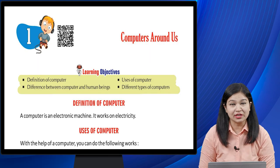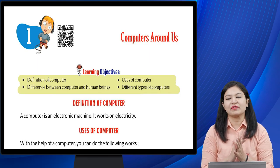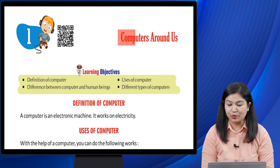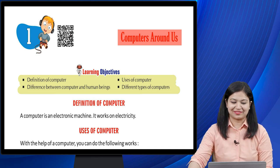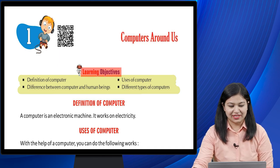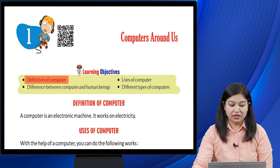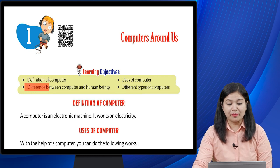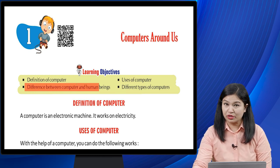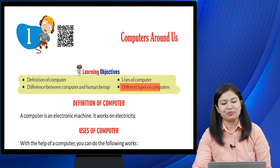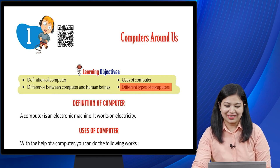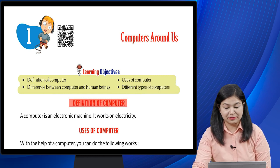Hello children, how are you all? Today we are going to start our very first chapter which is 'Computers Around Us'. The learning objectives include: definition of computer, difference between computer and human beings, uses of computer, and different types of computers.